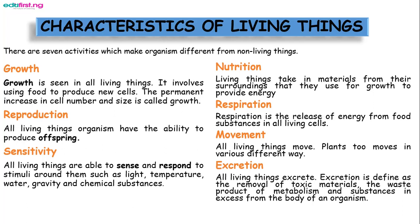The third characteristic is movement. All living things move, and the change in position is also known as locomotion. Plants move in various different ways as well. The fourth characteristic is excretion. All living things excrete. Excretion is defined as the removal of toxic material, the waste products of metabolism, and substances in excess from the body of an organism.